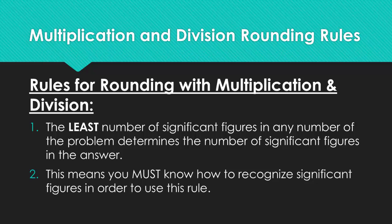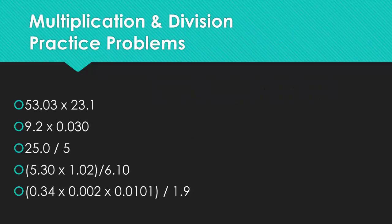Alright guys, so now let's try some actual problems. So let's look at the very first problem. You have 53.03, that is 4 significant figures. You also have 23.1, that is 3 significant figures. So therefore your answer, when you multiply the two of them together, should contain 3 sig figs. Pause the video right now, and try all 5 of these problems.